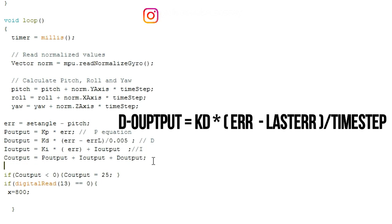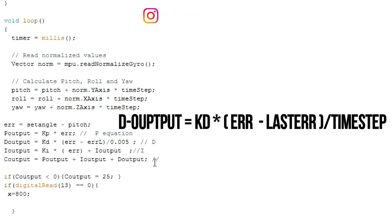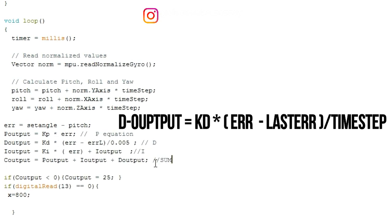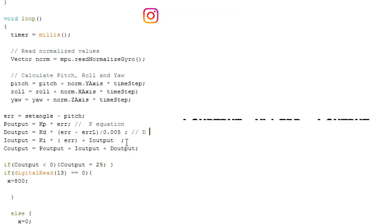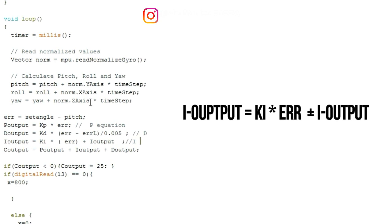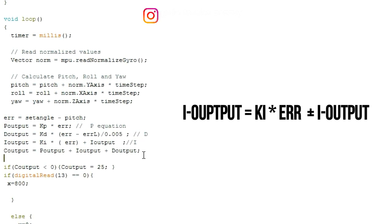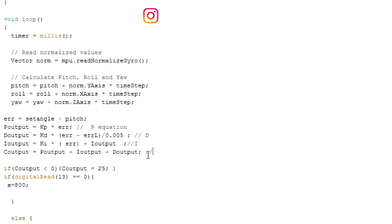The D output equals Kd multiplied by the error minus the last error, divided by the time step. The integral output equals the integral constant multiplied by the error, plus the old value of the integral controller.